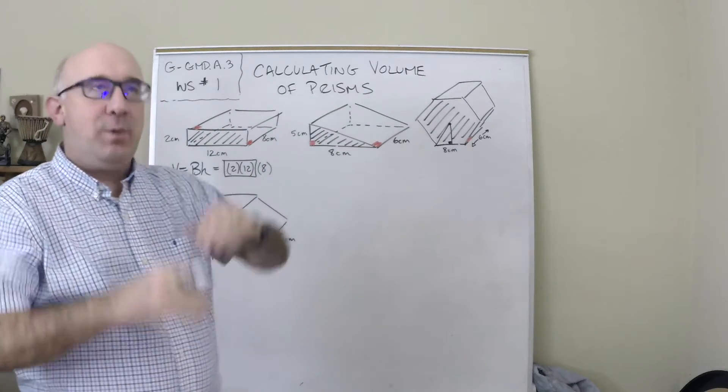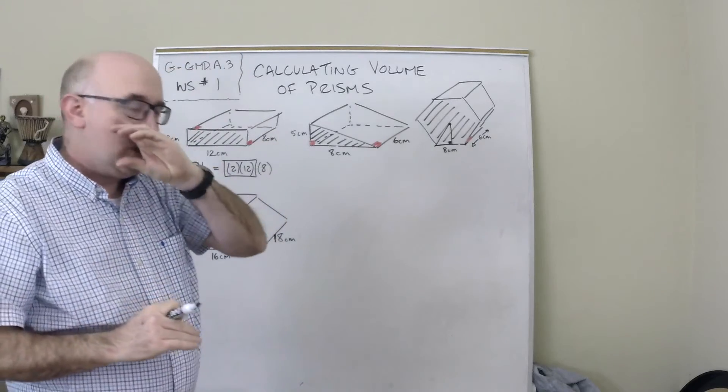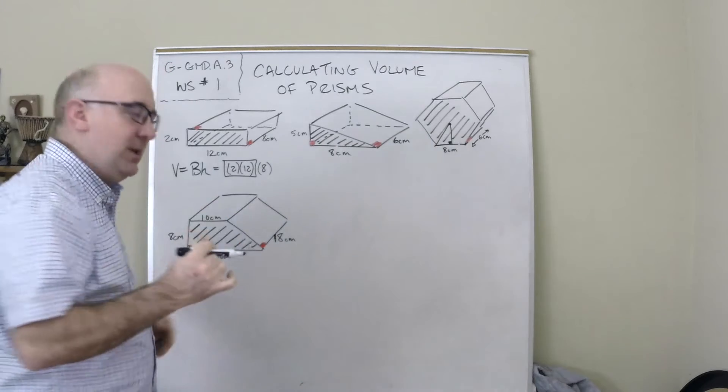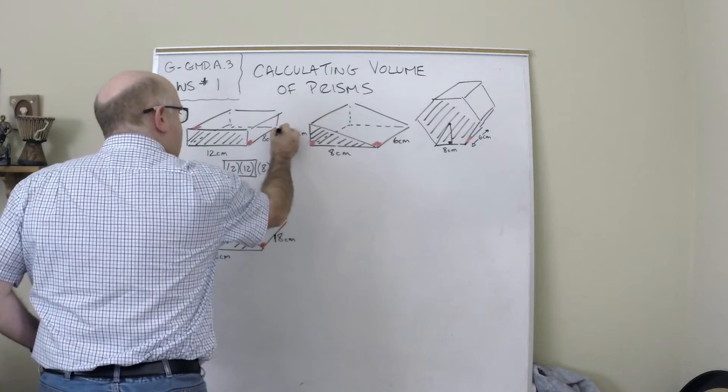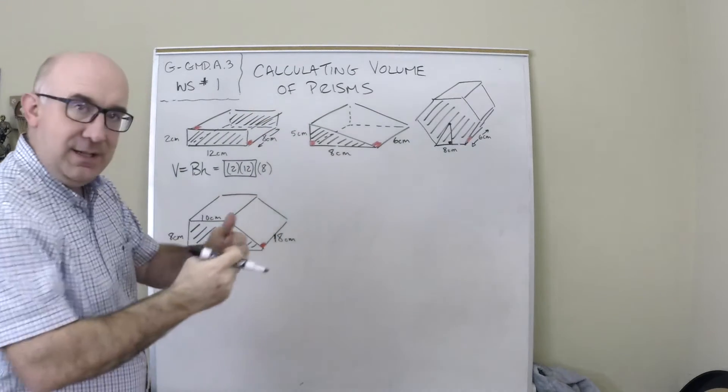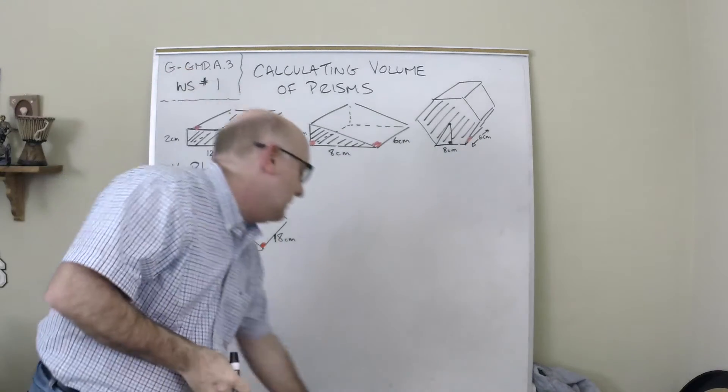Now a couple of things. Height, we want to think about how tall someone is. So we don't think of this as the height. The height is the distance between the two bases. So in this case, if I'm using the front face, the back face is the base and the distance between those is the height.